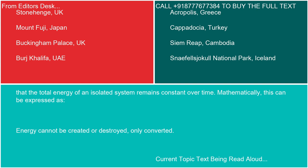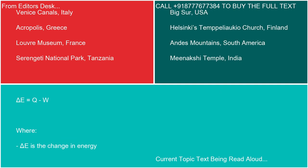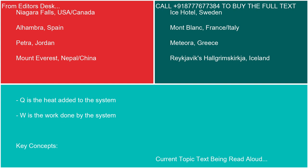Mathematically, this can be expressed as: energy cannot be created or destroyed, only converted. ΔU = Q - W, where ΔU is the change in energy, Q is the heat added to the system, and W is the work done by the system.